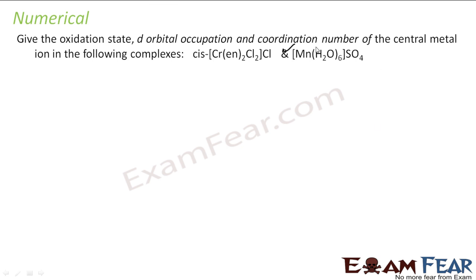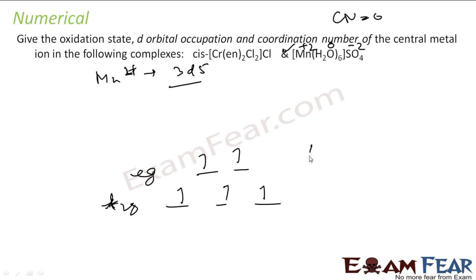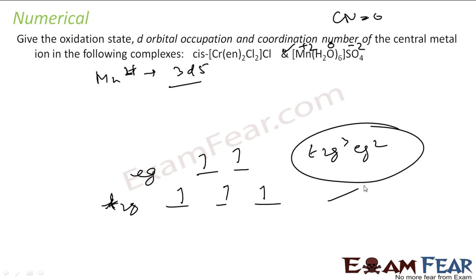For [Mn(H₂O)₆]SO₄: coordination number is 6 (six water molecules), so octahedral with t₂g and Eg levels. SO₄²⁻ is outside the coordination sphere; Mn oxidation state is +2. Mn²⁺ is 3d⁵. Water is a weak ligand, no forced pairing. Filling 5 electrons: 1, 2, 3 in t₂g and 4, 5 in eg. Electronic configuration: t₂g³ eg². Coordination number 6, oxidation state +2.